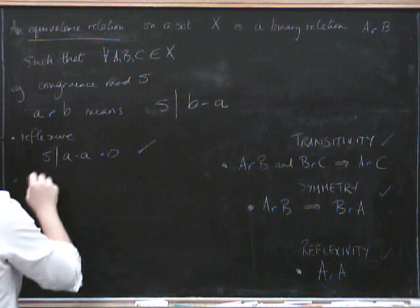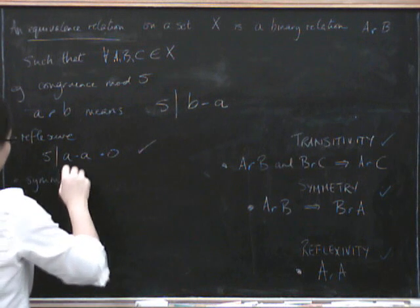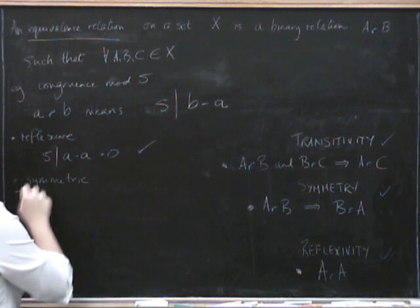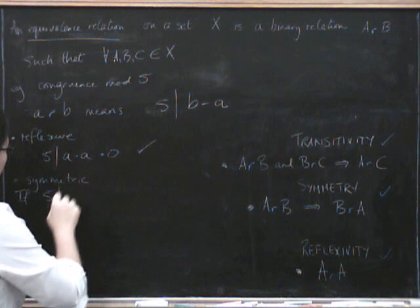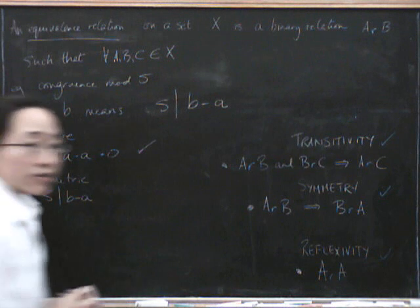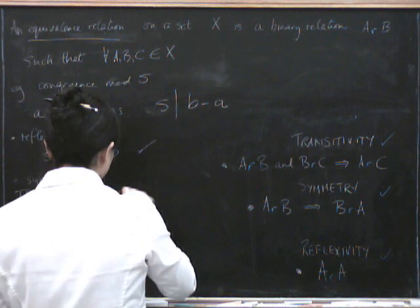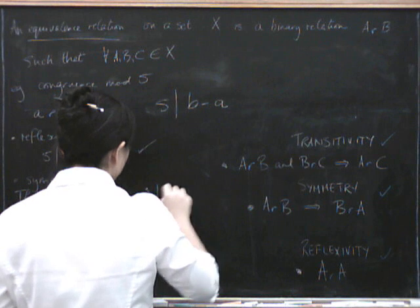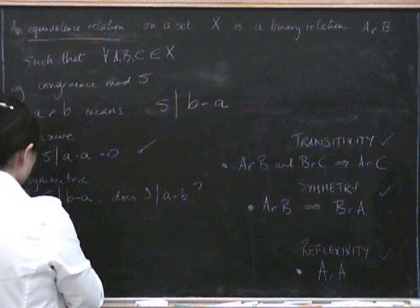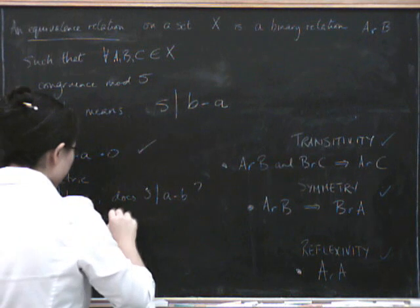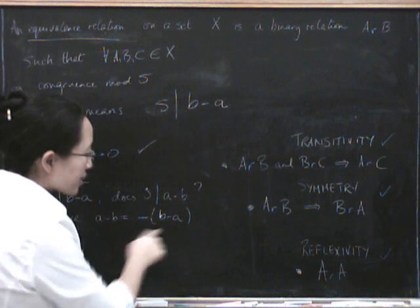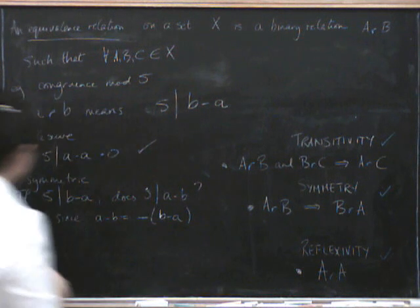So now let's try symmetry. Let's see if it's symmetric. So what we've got to show is that if five divides B minus A, does five divide A minus B? Well, that's clearly true as well, because since A minus B is just minus B minus A, if five divides this, then it definitely divides the negative of it.